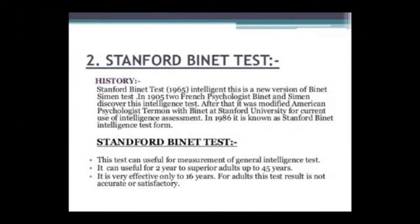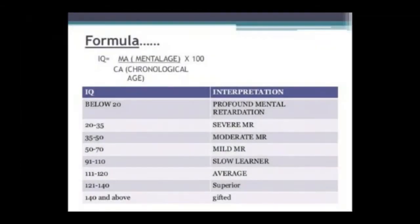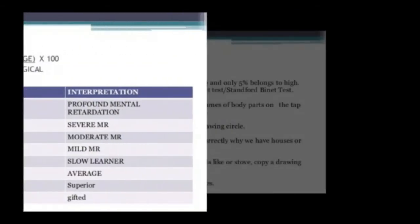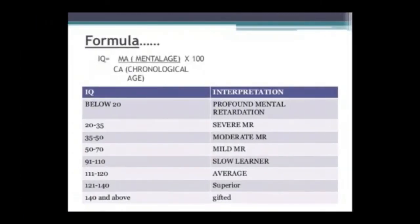The Stanford-Binet test is a newer version of the Binet-Simon test. In 1905, two French psychologists, Binet and Simon, discovered this intelligence test. IQ is calculated as mental age divided by chronological age, multiplied by 100.